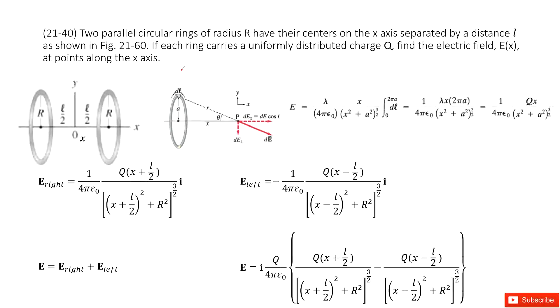Welcome to my channel. I'm Zhan Jingxu. Let's look at problem 40 in chapter 21. Chapter 21 is about electric charge and electric field. So we have this system: two parallel circular rings of radius R.